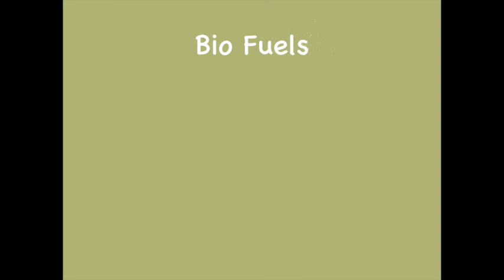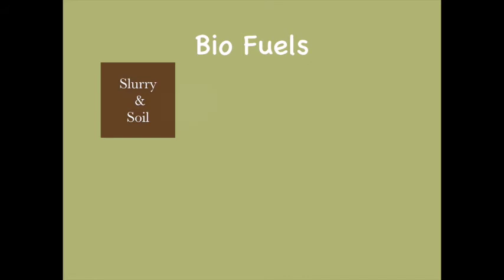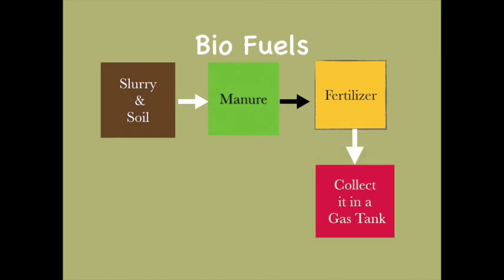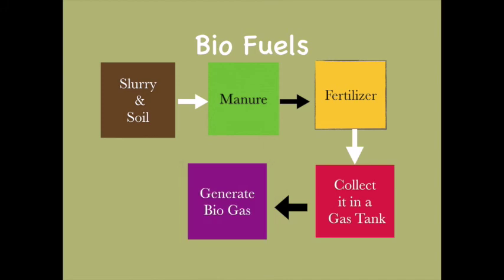Now let's learn about biofuel. In this scenario, slurry and oil are mixed with manure and fertilizers — a combination of bio materials. This mixture is collected in a gas tank, and the gas produced is called biogas, which is a biofuel. A few machines run on biogas, but they aren't very popular due to lower efficiency.